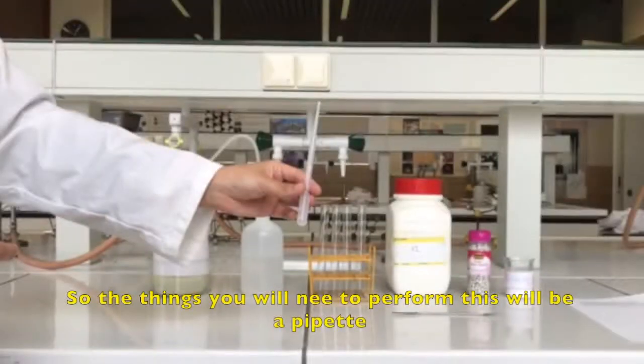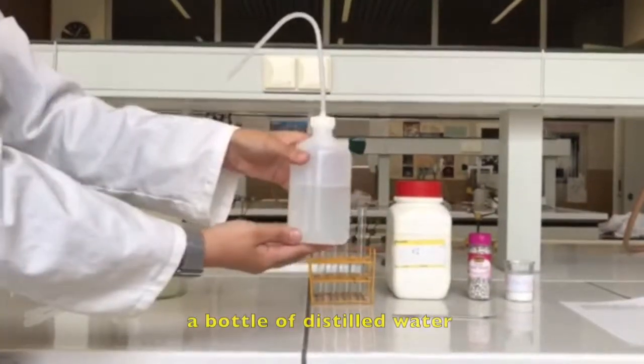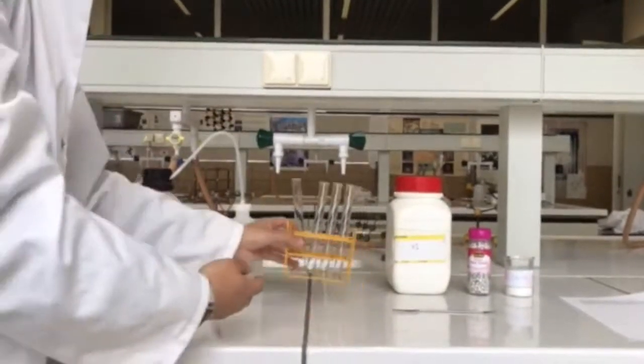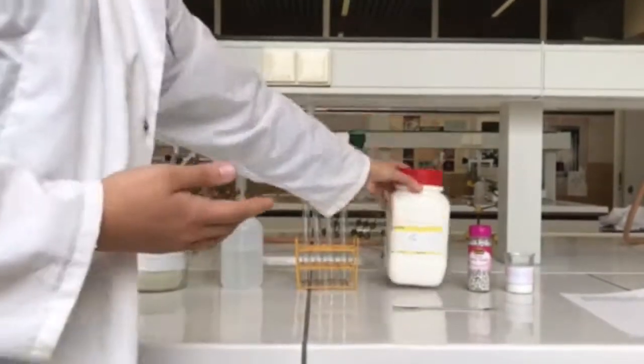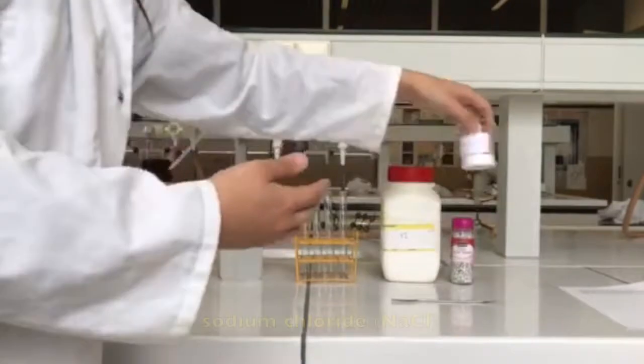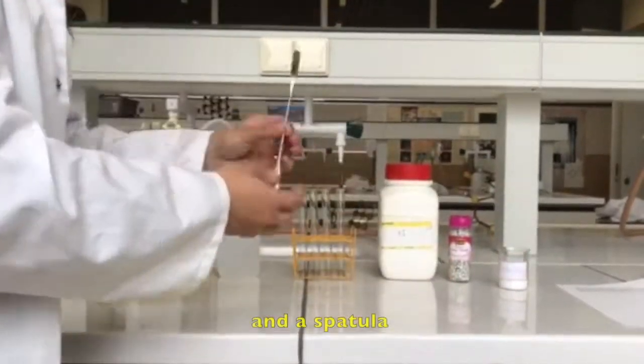The things you will need to perform this experiment are a pipette, nitric acid, a bottle of distilled water, a rack with four test tubes, potassium iodide, silver-colored sugar pearls, sodium chloride, and a spatula.